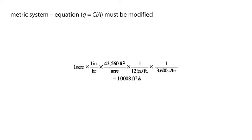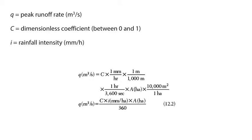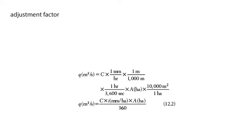For the metric system, the equation Q equals CIA must be modified so that it can be used with the following measurement units: Q equals peak runoff rate cubic meters per second, C equals dimensionless coefficient between 0 and 1, I equals rainfall intensity in millimeters per hour for the design storm frequency and for the time of concentration of the drainage area, and A equals drainage area in hectares. The adjustment factor is shown here.